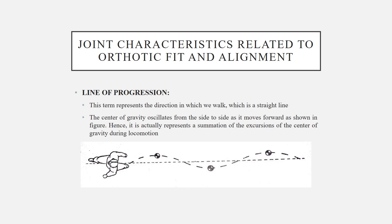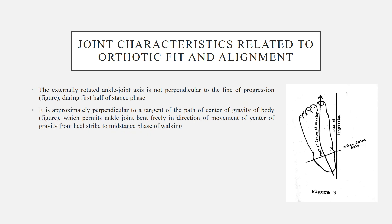Line of progression: This term represents the direction in which we walk, which is a straight line as shown in the figure. Although it is a straight line, the center of gravity oscillates from side to side as we move forward, so it actually represents the summation of excursions of the center of gravity during locomotion. The externally rotated ankle joint axis is not perpendicular to the line of progression during the first half of the stride. It is approximately perpendicular to a tangent of the path of the center of gravity of the body, which permits the ankle joint to bend freely in the direction of motion of the center of gravity from heel strike to mid-stance phase of walking.